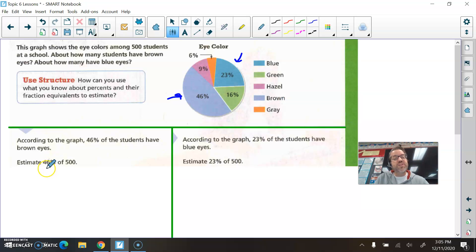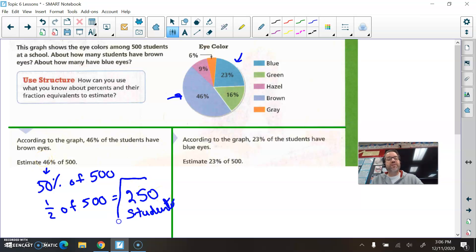So this 46% does represent brown eyes. Estimate 46% of 500. Well, you know, 46% is pretty close to half, isn't it? It's really close to 50%. So I'm really trying to find about what half or 50% of 500 is. Can you find half of 500? Is that something you can do mentally? Well, if you can cut 500 in half, it'd be about 250. Okay, so about how many students have brown eyes? About 250 students.